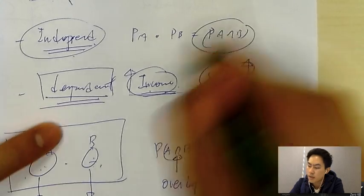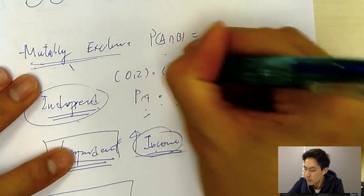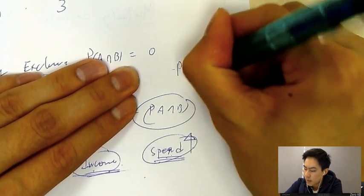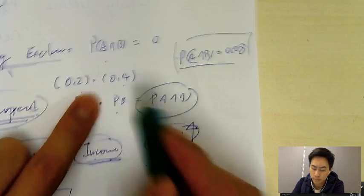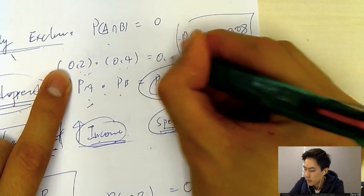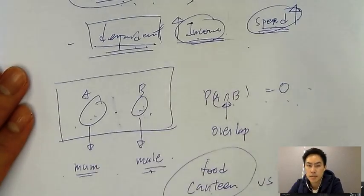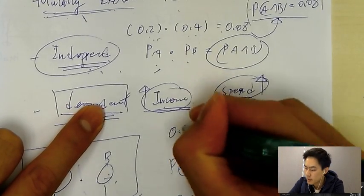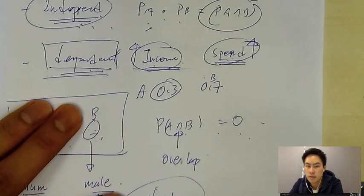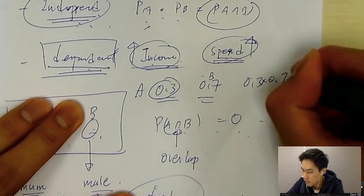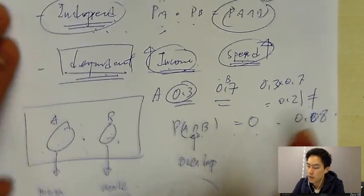Mathematically, for independent events, P(A∩B) must equal P(A)×P(B). For example, if P(A∩B) = 0.08, and P(A) = 0.3 and P(B) = 0.7, then P(A)×P(B) = 0.3×0.7 = 0.21, which is not equal to 0.08. Since P(A)×P(B) ≠ P(A∩B), these are dependent events, not independent.